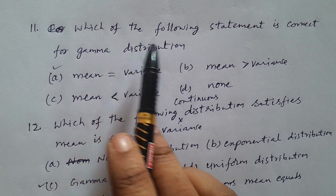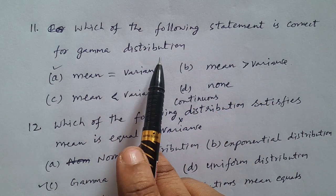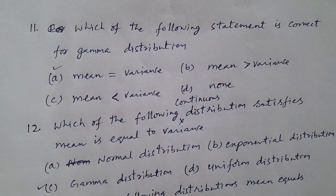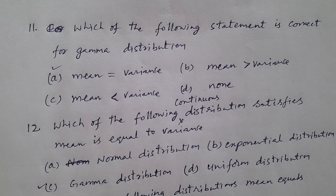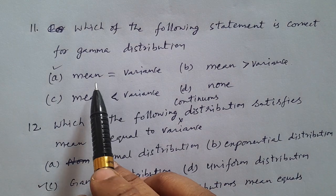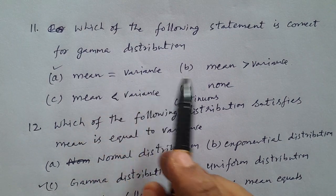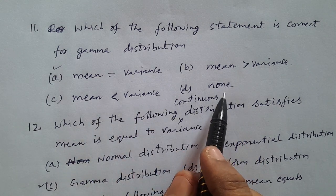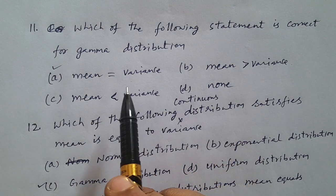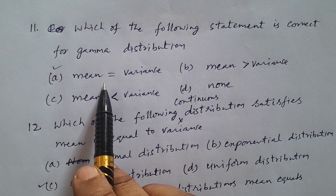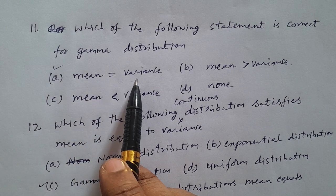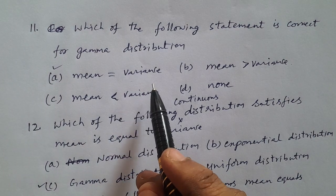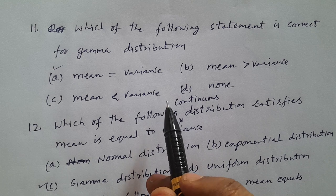In Telugu: Which of the following statements is correct for gamma distribution? Options are mean equal to variance, mean greater than variance, mean less than variance, or none. Gamma distribution mean is equal to variance — that is the correct option. This was also discussed in the last class.